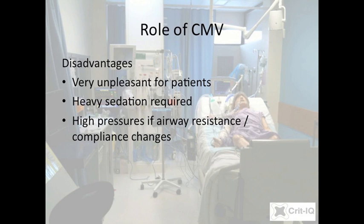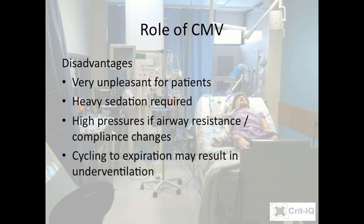To prevent this, an upper pressure limit and alarm is often set. Once this pressure limit is reached, the ventilator will cycle into expiration. While this will potentially protect the lung from further damage, it will also markedly reduce ventilation unless the underlying problem is immediately addressed.